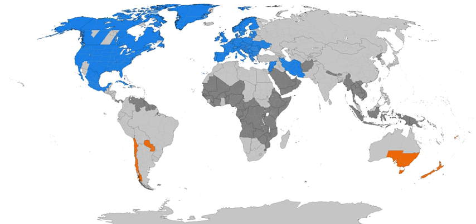For example, TZ=EST5EDT,M3.2.0,2:00,M11.1.0,2:00 specifies time for the eastern United States starting in 2007. Such a TZ value must be changed whenever DST rules change, and the new value applies to all years, mishandling some older timestamps.